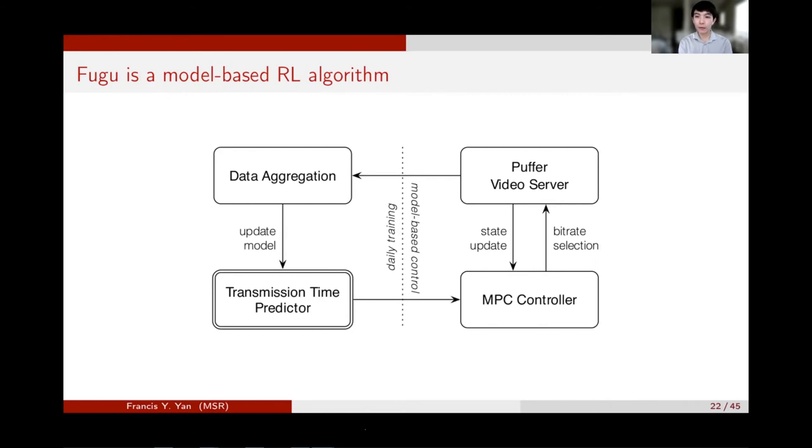So after the dynamic programming gives us an optimal plan, Fugu only takes, so the optimal plan is shown as the blue boxes. Fugu only takes the first step and then replans for the next five chunks. This is also a classical technique in control theory called model predictive control, which proves to be helpful to mitigate the accumulation of errors, so the model errors or any other sources of errors. Putting everything together, including the Puffer video server, the model-based controller, and the TTP, Fugu falls into a class of RL algorithms called model-based RL. The optimal plan of chunk qualities is computed in real time with dynamic programming and repeated queries of TTP. After new data is collected and aggregated, we retrain TTP offline using supervised learning, and we deploy the new version of Fugu on the next day.